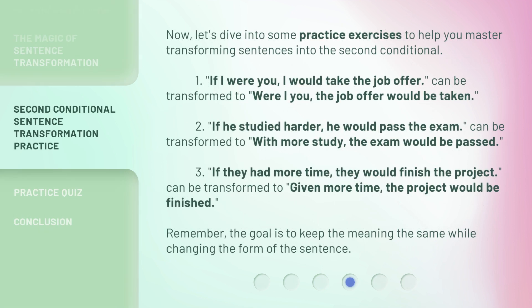Now, let's dive into some practice exercises to help you master transforming sentences into the second conditional. One: 'If I were you, I would take the job offer' can be transformed to 'Were I you, the job offer would be taken.' Two: 'If he studied harder, he would pass the exam' can be transformed to 'With more study, the exam would be passed.'